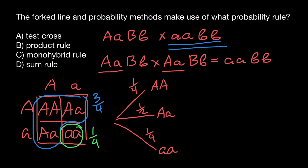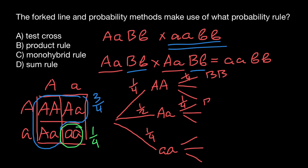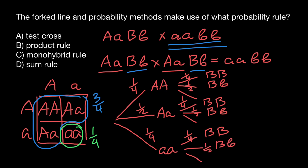The same picture applies for gene B. If both parents are heterozygous for gene B, we get three variants. The probability of capital B capital B is one quarter; capital B small b is one half; and small b small b is one quarter.